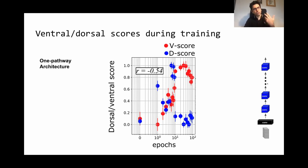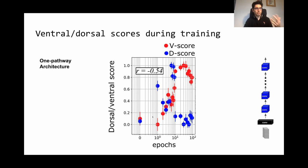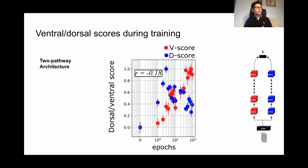Taking the trained model and measuring its similarity to the ventral and dorsal streams throughout training, we see an anti-correlation: as the model becomes more similar to the dorsal pathway, it loses similarity with the ventral pathway. This indicates a conflict between these two types of representations. When we use a model with two parallel pathways, this anti-correlation decreases, meaning the two types of representations are disentangled across the two pathways, and the architecture enables the model to learn different representations simultaneously.